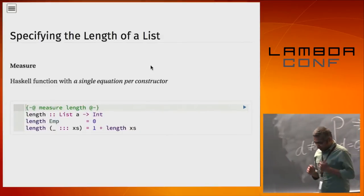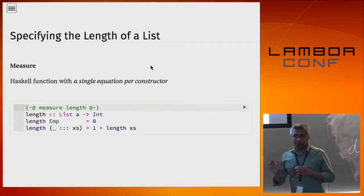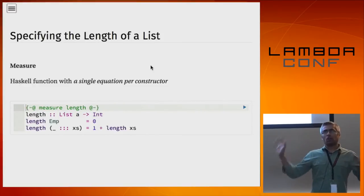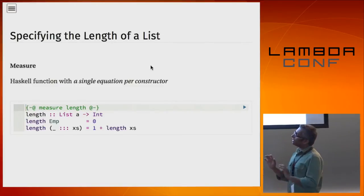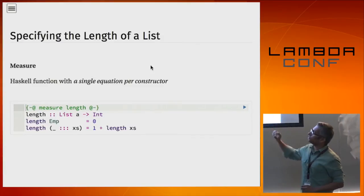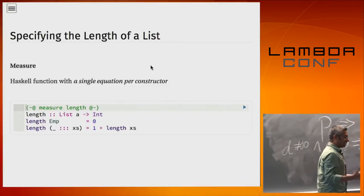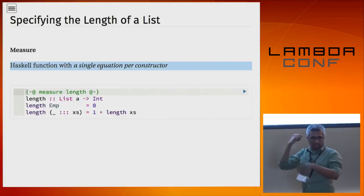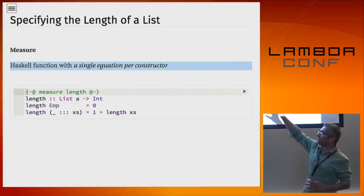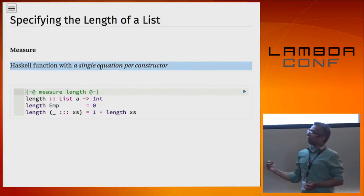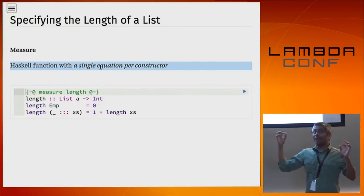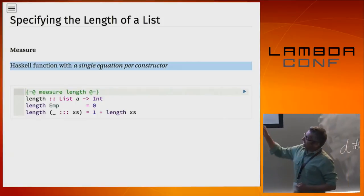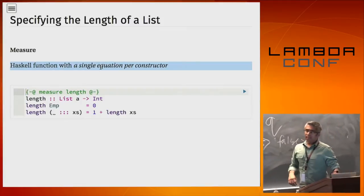Instead, I'm going to let you write Haskell functions with a very specific structure: a single equation per data constructor, where all the right-hand-side definitions belong in the refinement logic. For example, zero is in the logic, plus is in the logic, one is in the logic, and 'length xs' is also in the logic via uninterpreted functions. We call these things measures. Having defined these measures, we can use them inside our function definitions. When you define a measure, it automatically changes the types of the data constructors: Emp has type List A where length = 0, and Cons gives you a List A whose length = 1 + length xs.